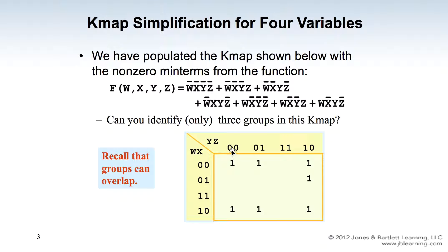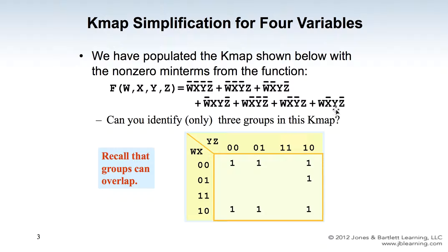The second minterm is W-not, X-not, Y-not, Z — placed in the corresponding cell. The third minterm is W-not, X-not, Y, Z-not. The fourth minterm is W-not, X, Y, Z-not. The next minterm is W, X-not, Y-not, Z-not. The following one is W, X-not, Y-not, Z. And the last minterm is W, X-not, Y, Z-not.